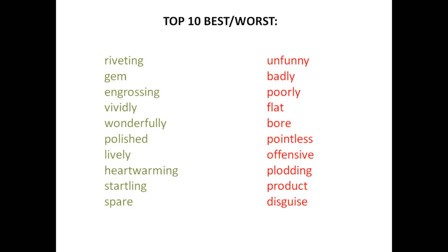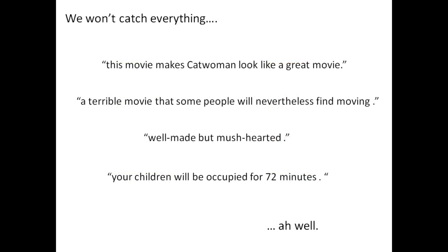Let's look a bit more at some properties of this classifier. Here are the top 10 best and worst words. They kind of make sense: gem, engrossing, vividly, wonderfully, polished — versus unfunny, badly, poorly, pointless, offensive. And here are examples of reviews that were classified incorrectly. Take a look at the first one: 'This movie makes Catwoman look like a great movie.' Can you really blame the classifier for getting this wrong? How is it to know that Catwoman is a terrible movie? How is it to understand the hidden meaning behind these words? The second one is even harder — I would argue that not even I can classify that sentence. The review in the last example is beyond what exists in the words: you have to understand it to classify it.